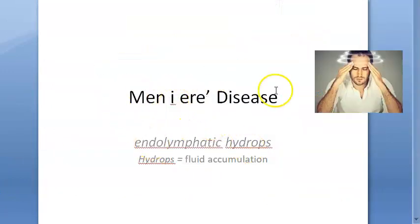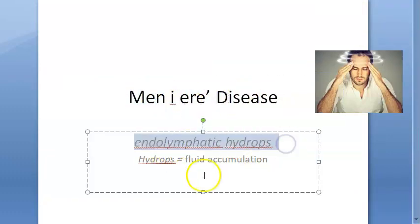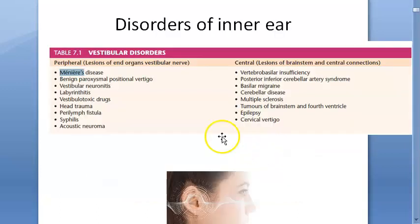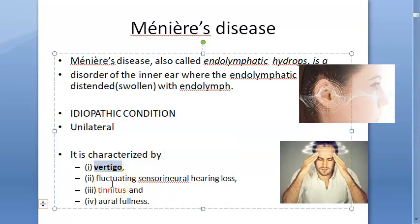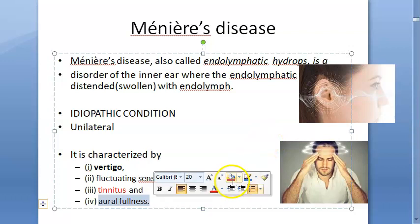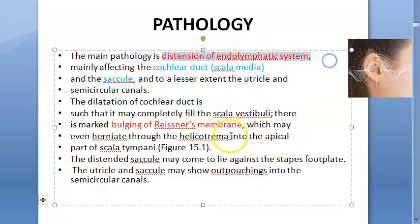As a quick recap: Meniere's disease — note the spelling M-E-N-I-E-R-E — is endolymphatic hydrops, meaning there is excess endolymph inside the inner ear. It is a peripheral vestibular disorder and an idiopathic condition — nobody knows why the endolymph increases. It is unilateral, affecting only one ear, and causes vertigo, a sense of reeling or disorientation.